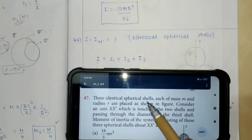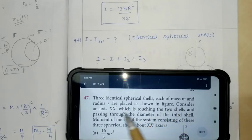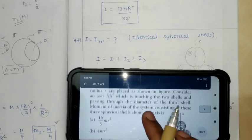Three identical spherical shells, each of mass m and radius r, are placed as shown in the figure. Consider an axis xx' which is touching the two shells and passing through the diameter of the third shell. Moment of inertia of the system consisting of these three spherical shells about xx' axis is?